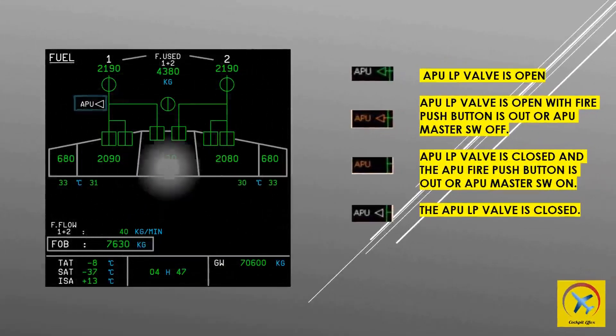The APU LP valve is open if it shows a green arrow and APU wording in white. The APU LP valve is open with the fire push button out or APU master switch off if it shows an amber arrow and APU wording in amber. The APU LP valve is closed and the APU fire push button is out or APU master switch is on if it shows APU wording in amber. APU wording in white with no arrow shows the APU valve is closed.